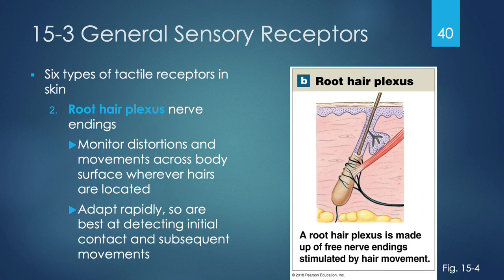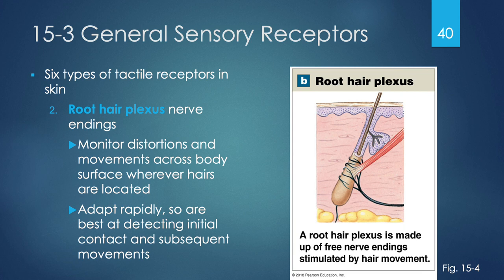Root hair plexus nerve endings are similar to free nerve endings, but instead of extending up into the epidermis, they wrap around the root of the hair. As a result, they monitor any distortion or movement on body surfaces where we have hair. Root hair plexuses adapt rapidly — so we're not constantly aware of a sweater rubbing on our arm hair. They detect initial contact and subsequent changes, but we quickly phase out ongoing awareness of them.